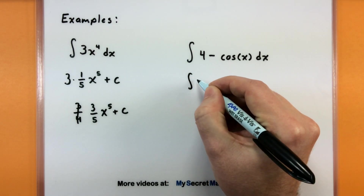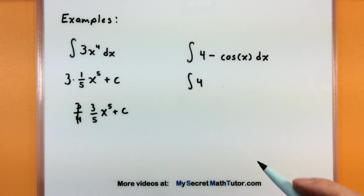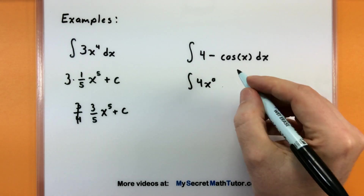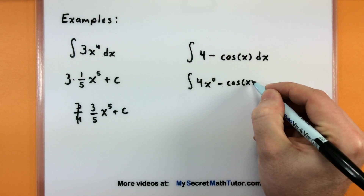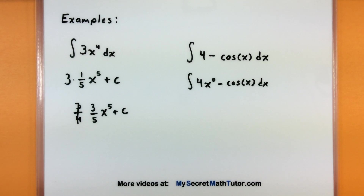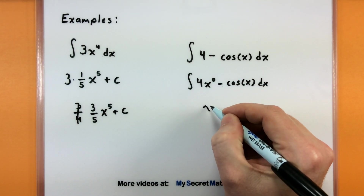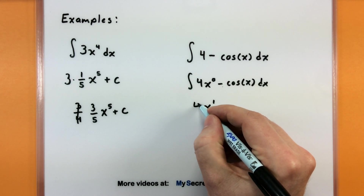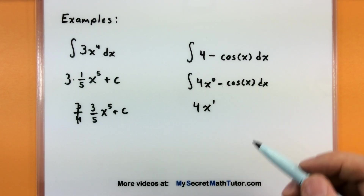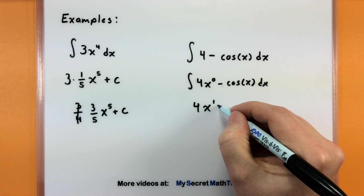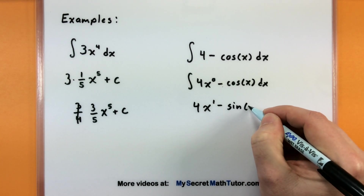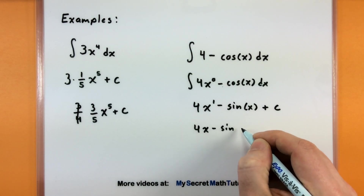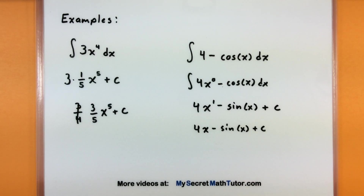Let's try another example and walk through it more carefully. If you see a constant not being multiplied by anything, you can consider it a variable with a power of zero. So I add one to the power: zero plus one is one, and I divide by this new power, so four divided by one is simply four. Moving on to cosine: what function's derivative equals cosine? That would be sine. We put a plus C on the end, and cleaning up: this is 4x plus sine of x plus a constant, and that's the anti-derivative.